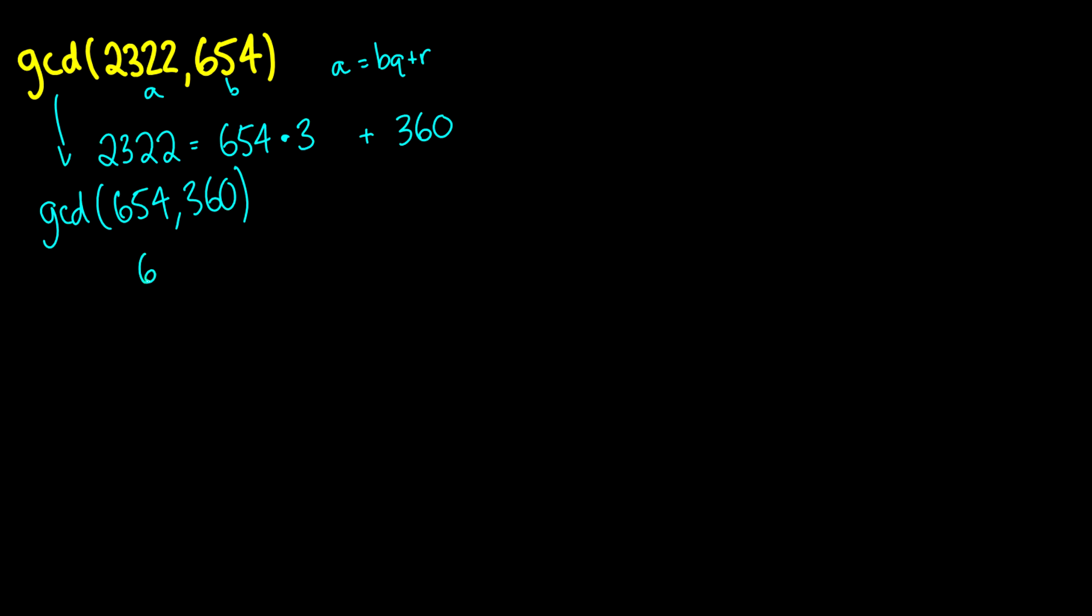So 654 is equal to 360 times 1, because 2 times 360 is going to be 720, and then we get a remainder of 294, which means this is equivalent to the GCD of 360 and 294. So 360 is equal to 294 times 1 plus 66.